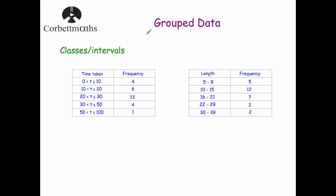In this video we're going to look at some of the terminology you might encounter when dealing with grouped data. We've got two different tables. One is for time taken, with classes like 'greater than 0 but less than or equal to 10', 'greater than 10 but less than or equal to 20', and so on. The other table has length classes: 5 to 9, 10 to 15, 16 to 21, and so on. I'll sometimes discuss them together and sometimes separately.